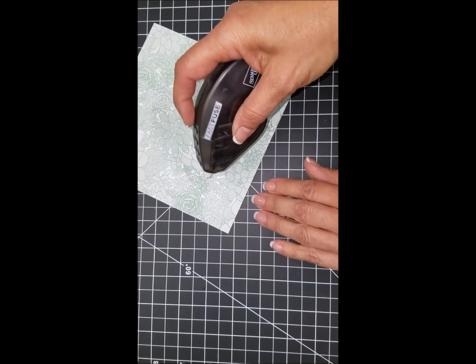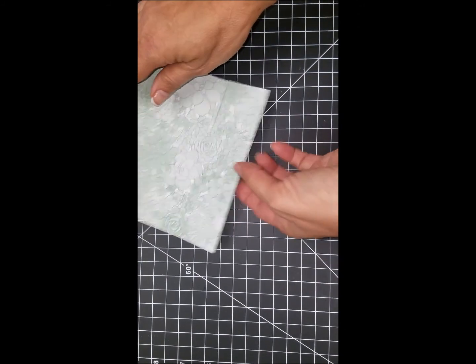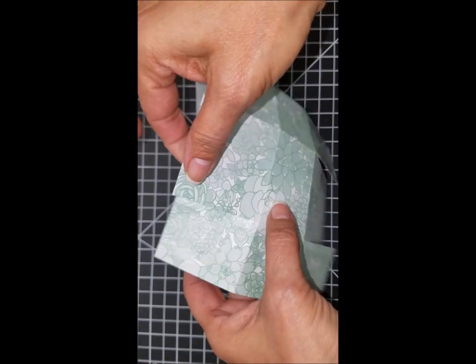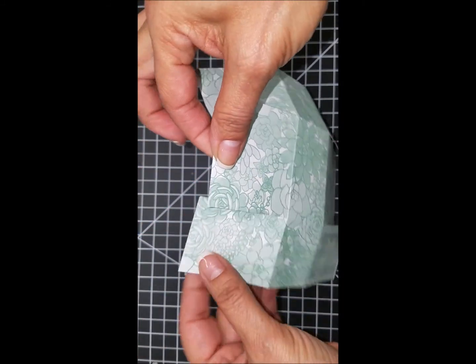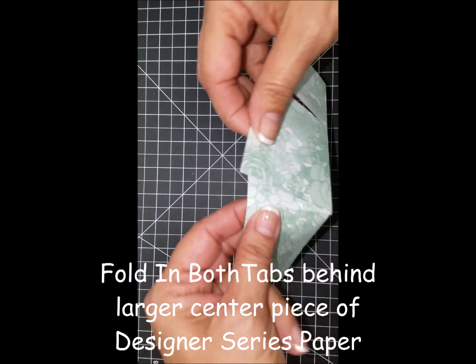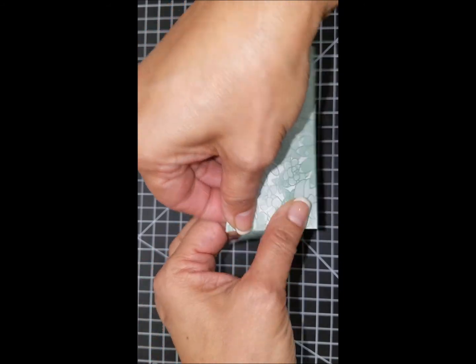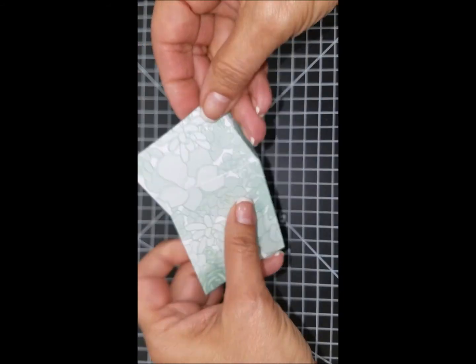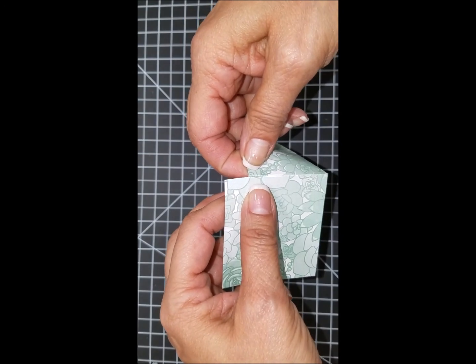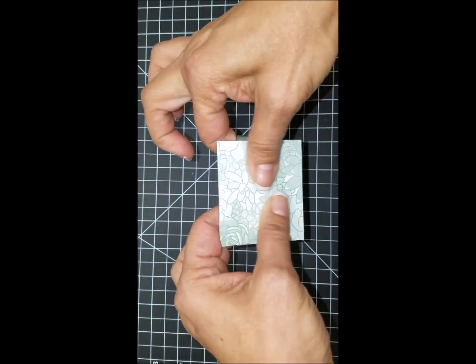Now we're gonna take and tuck those ends to the inside of the center panel. Be sure and square those up neatly, this will be your front of your bag. Press, tuck in the other side right behind it, square up that corner and press.